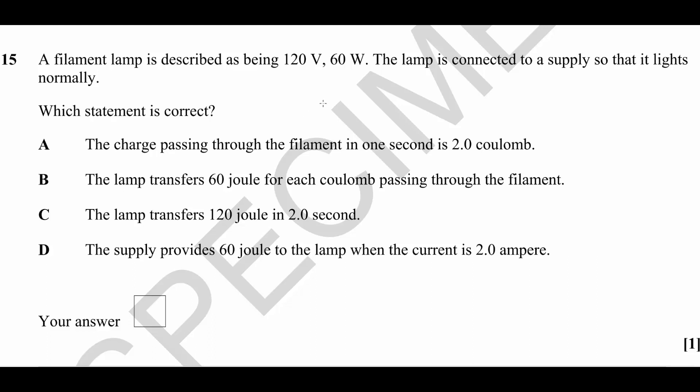Which of these statements is correct? The charge passing through the filament in one second is two coulombs. Now charge per second is current, so if we can work out the current here that will give us the number of coulombs flowing per second. We know that P is equal to IV, I is the current and V is the voltage.